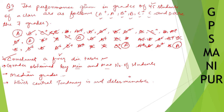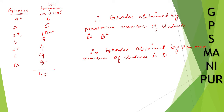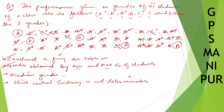Now we need to find the median grade. Median grade means the middle grade. The grades are: A+, A, B+, B, C+, C, D — that is seven grades, so B is the middle one. Therefore, the median grade is B.